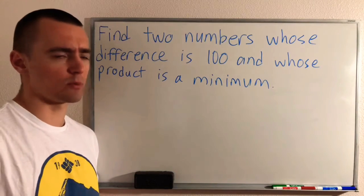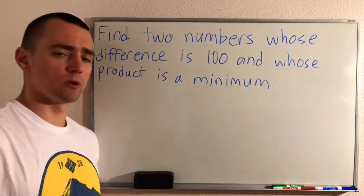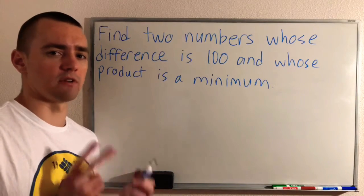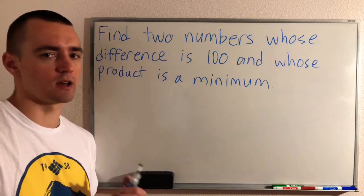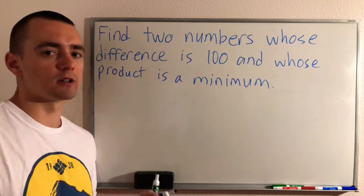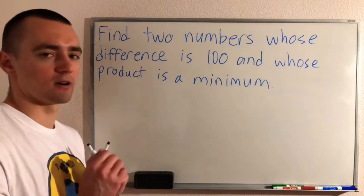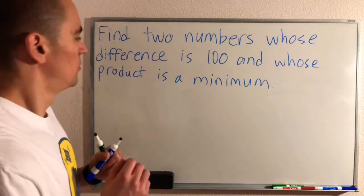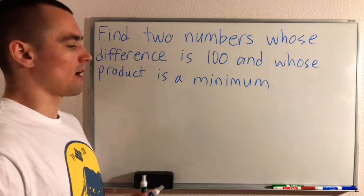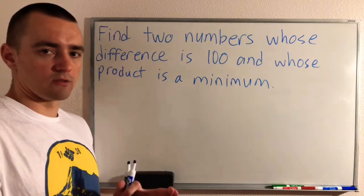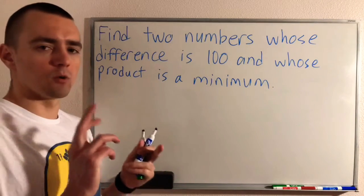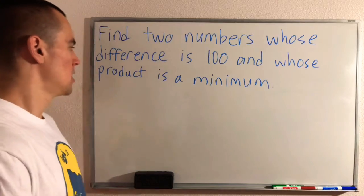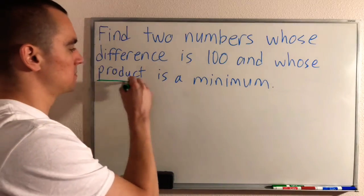This is a fairly common type of problem. When you're doing a problem like this, there are two different types of information given to you that you want to write out in mathematical terms before applying any calculus. Those two things are: what your goal or objective is, and what restrictions are being given. We know we're trying to make the product a minimum.